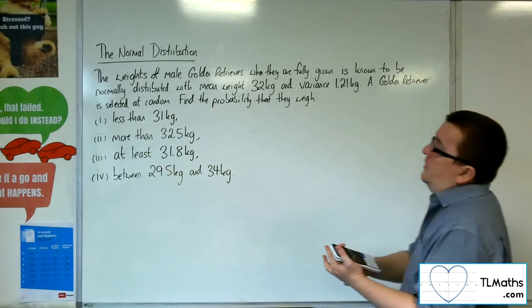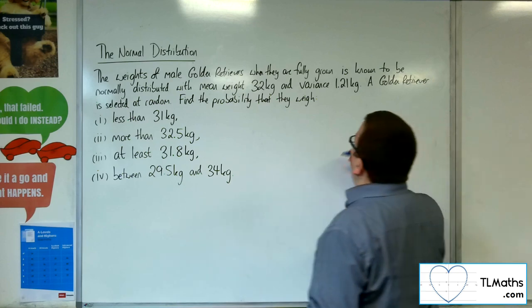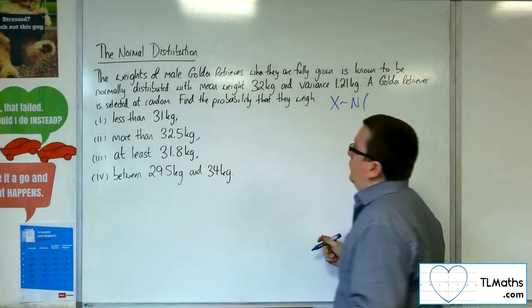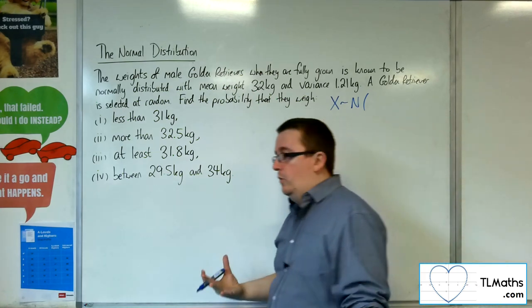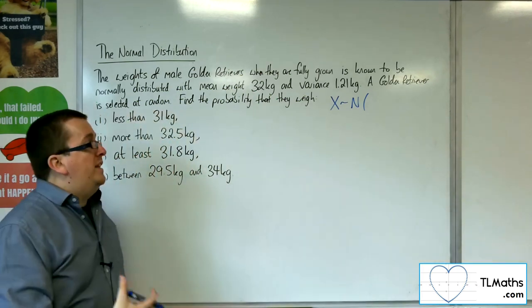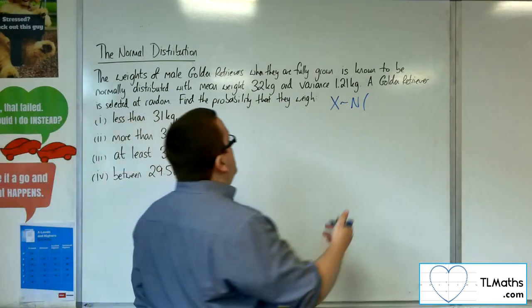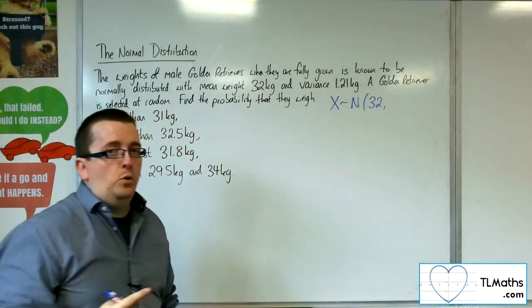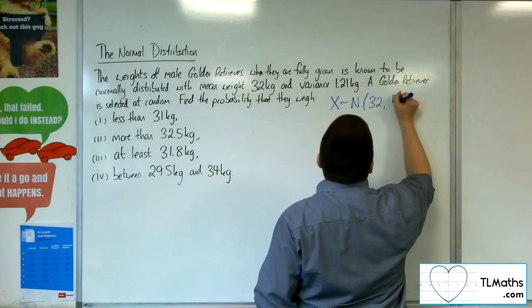The first thing we want to do is call the weights X and identify the key features of what we're told here. So we're told that it's normally distributed. We know the mean weight is 32 and we're told the variance is 1.21.